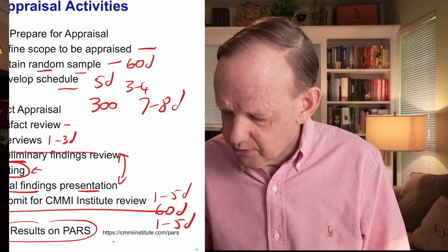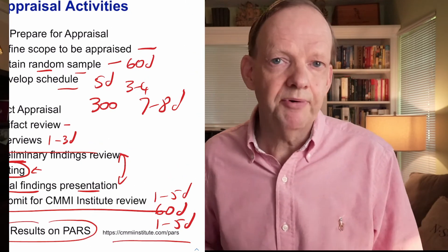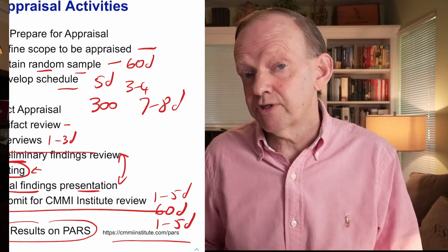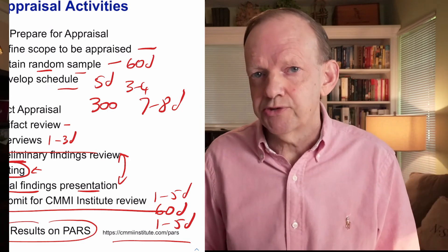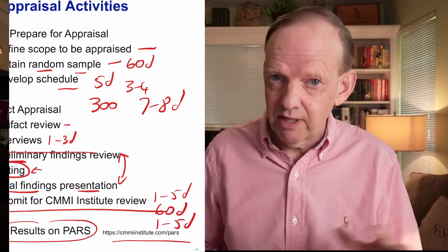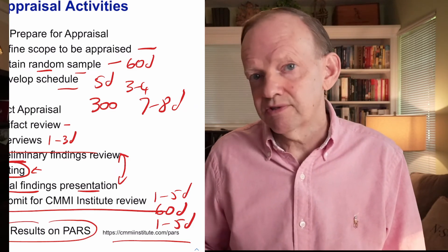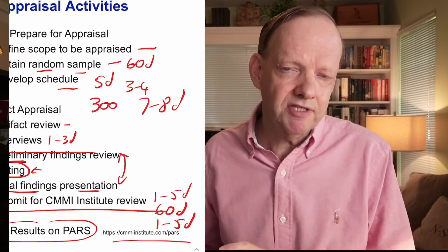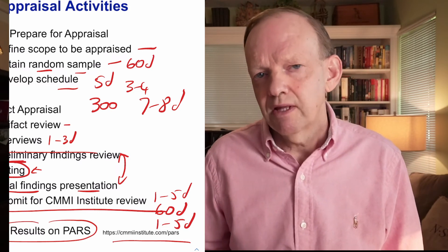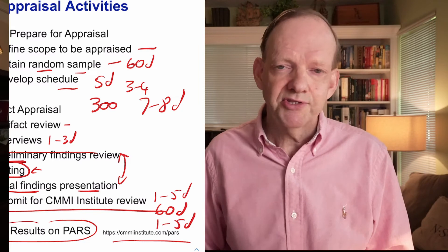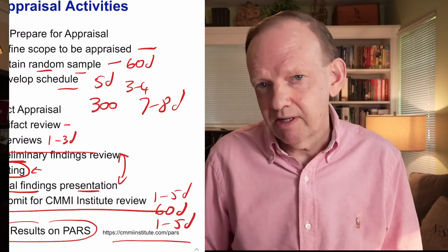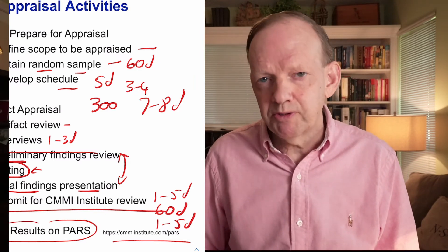Once blessed, you can publish the results — you can't publish until the Institute approves. You go to the Institute's web system and if you want to publish the rating and summary to the world, you can do that. If the sponsor doesn't want to share it for some reason it's still a valid appraisal, but they don't have to tell anybody. I've had a couple of examples where a company was level two but their competitors were level four, so they didn't want to publicize it.